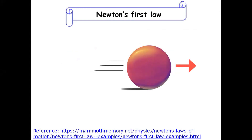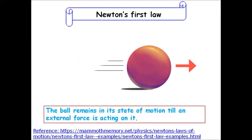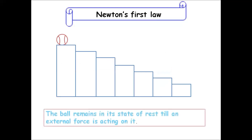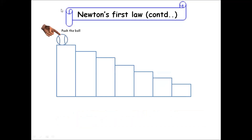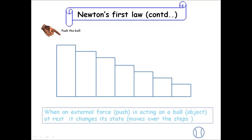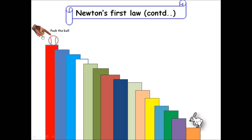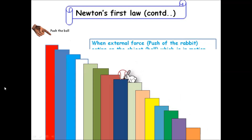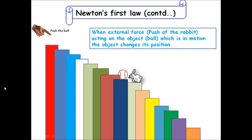As shown in the animation, the ball remains in its state of motion till an external force is acting on it. In this example, we can see the ball remains in its state of rest till an external force is acting on it. When an external force acts on a ball at rest, it changes its state. From the animation, we can observe that when an external force acts on an object which is in motion, the object changes its position.